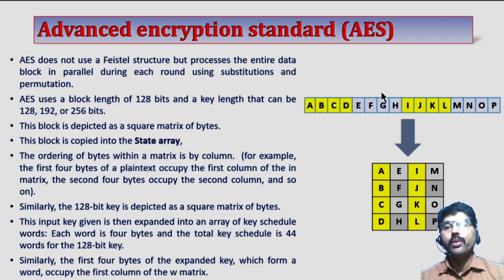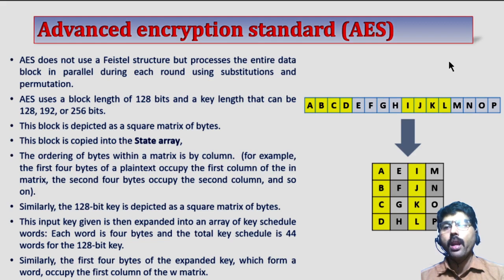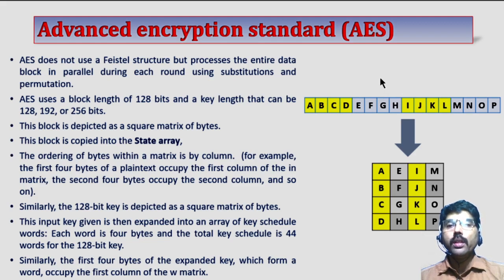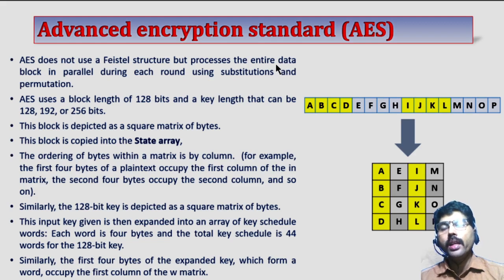AES does not use a Feistel structure but processes the entire data block in parallel during each round using substitutions and permutations. In AES we have totally 10 rounds. In each round it is not following any Feistel structure but the data is actually processed in parallel.